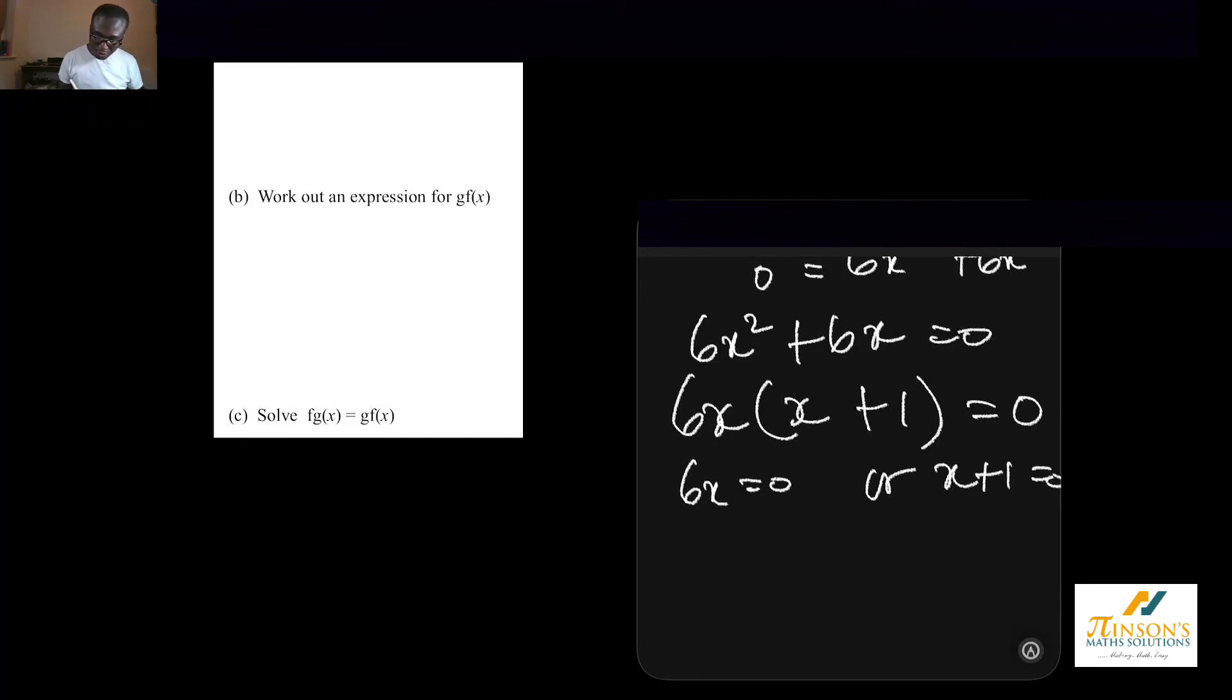When 6x equal to 0, divide both sides by 6 and x is 0. Or when x add 1 equal to 0, minus 1 from both sides and x is minus 1. So in solving, we've been able to determine that x is either equal to 0 or x is equal to minus 1.